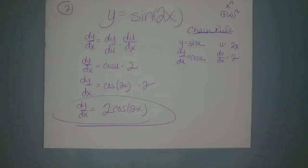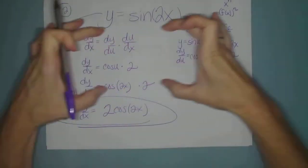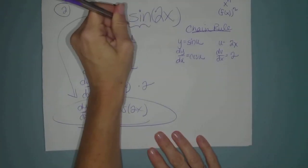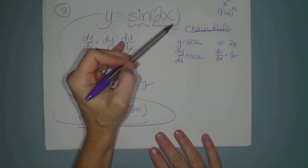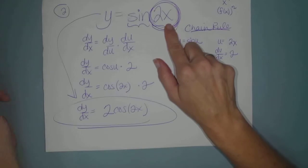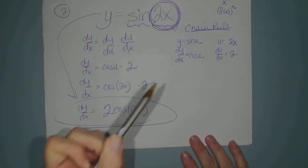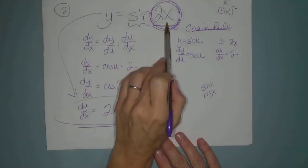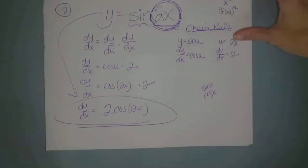Now there's a rule called the outside-inside rule — a shortcut to get the answer without all that work. The shortcut is: if you have a trig function with more than just an x inside, you do it the same way you normally would. The derivative of sine is cosine, so sine of 2x becomes cosine of 2x. But then you must multiply by the derivative of the inside, which is just 2. So the outside becomes cosine and you multiply by the derivative of the inside.